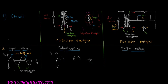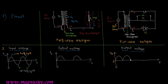For the full wave rectifier output waveform, along the horizontal axis time t is plotted, and along the vertical axis, output voltage VO across load resistance RL is plotted. Both the positive half cycle and the negative half cycle — which is converted into a positive half cycle — appear in the output waveform.